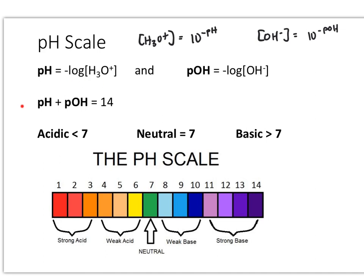Additionally, the equation pH + pOH = 14 allows us to interconvert between pH and pOH in a very simple way. So if I'm given pH, I can solve for pOH based on this relationship, and vice versa. All five of these equations — make sure you know them, understand them, and are comfortable with them.